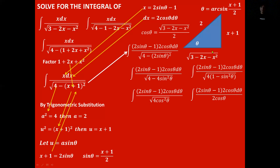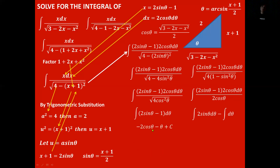Observing the expression, we can cancel the 2 cos theta in the numerator and denominator, leaving the integral of 2 sin theta minus 1, d theta. Distributing the integral gives us the integral of 2 sin theta d theta minus the integral of d theta, which integrates to negative 2 cos theta minus theta plus C.